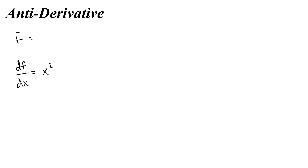Maybe you would see that if I took the derivative and got x squared, then that meant my original function had a power of 3, because when I go from x cubed and take its derivative, that 3 gets reduced by 1, so I would go to 2.